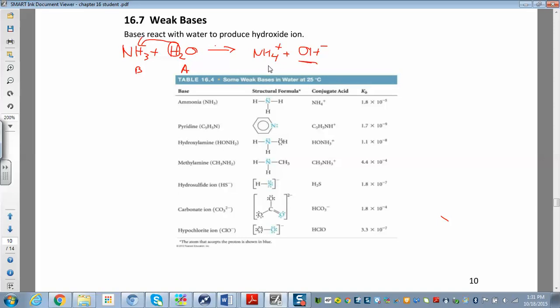This is the conjugate acid. So if we were to write the KB expression now, KB is just going to be products over reactants. So the concentration of NH4+ times the hydroxide ion.